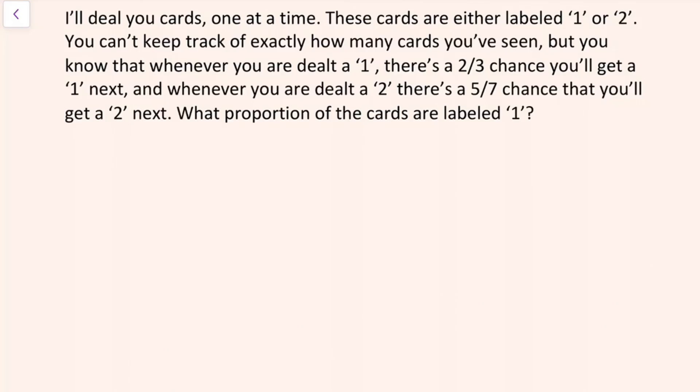And the interviewer says, I'll deal you cards, one at a time. These cards are either labeled one or two. You can't keep track of exactly how many cards you've seen, but you know that whenever you're dealt a one, there's about a two-thirds chance that you'll get a one the next time. And whenever you're dealt a two, there's about a five-sevenths chance that you'll get a two the next time. What is the proportion of cards that are labeled one?